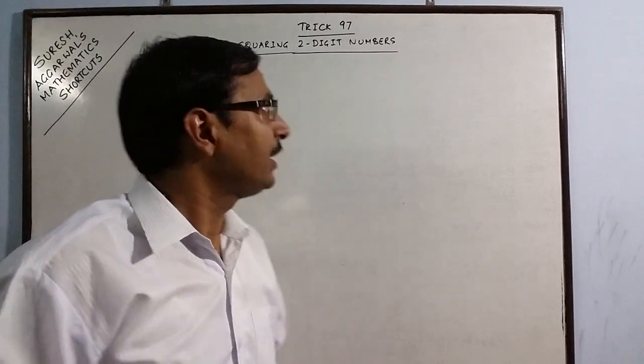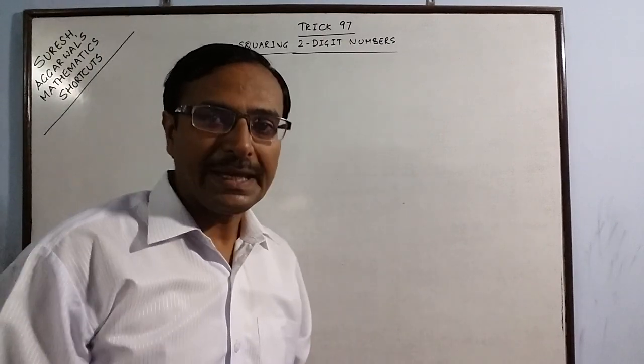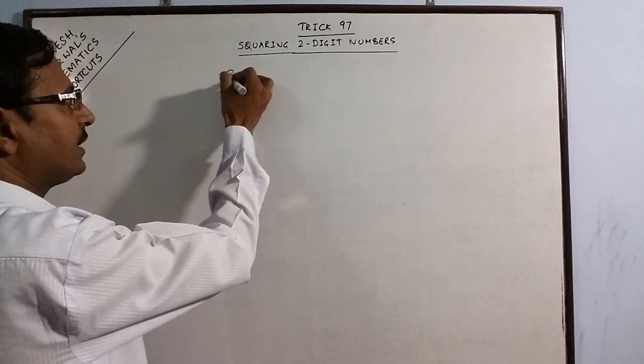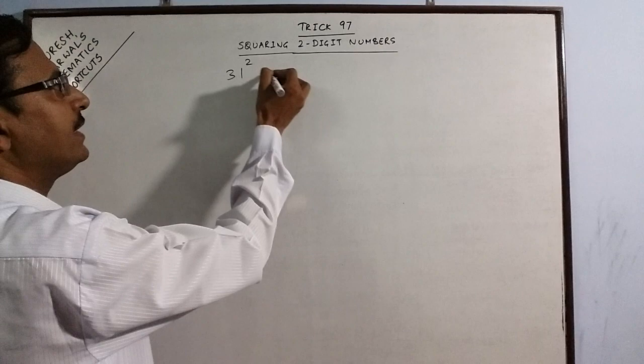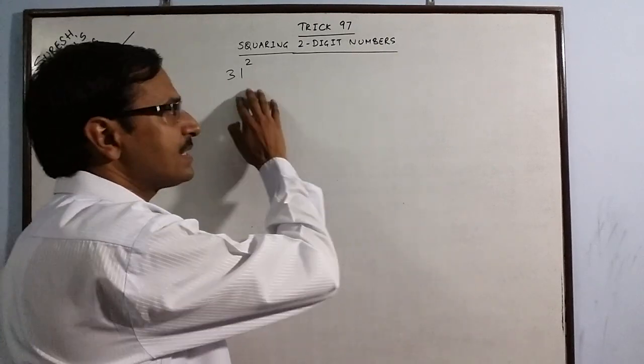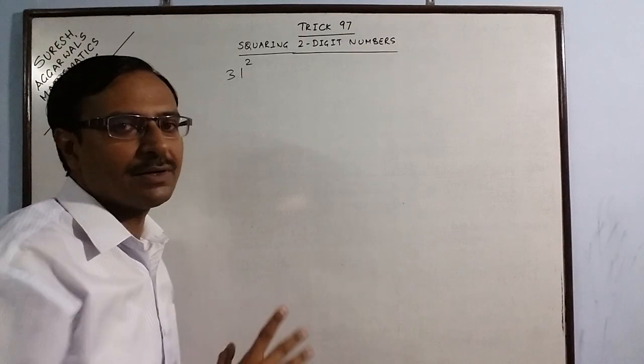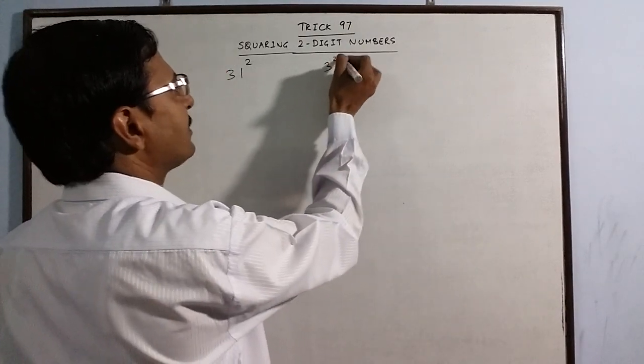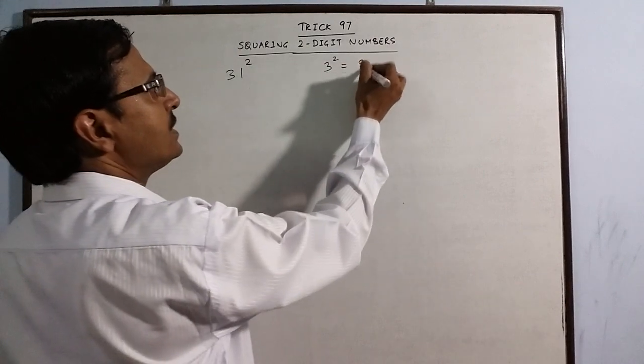Let me demonstrate this using a simple number, 31. Say we have to find the square of 31. I will read the steps in the first example, then we will get rid of the steps in the subsequent examples. First step is to square the first digit.